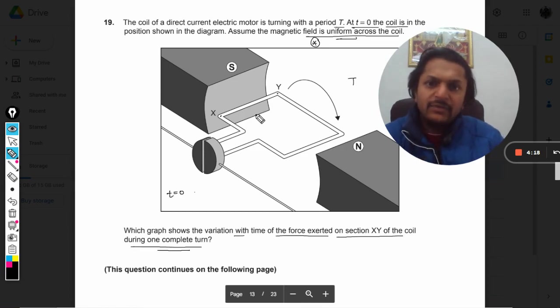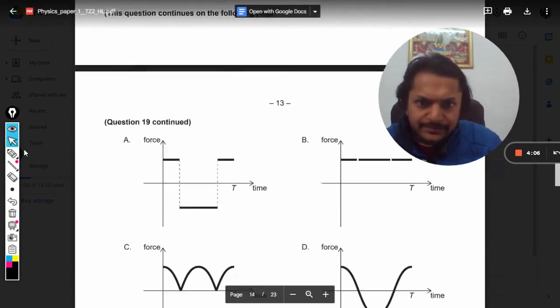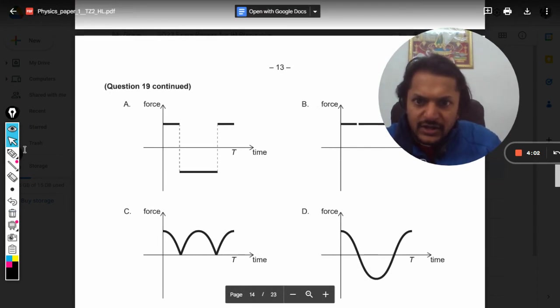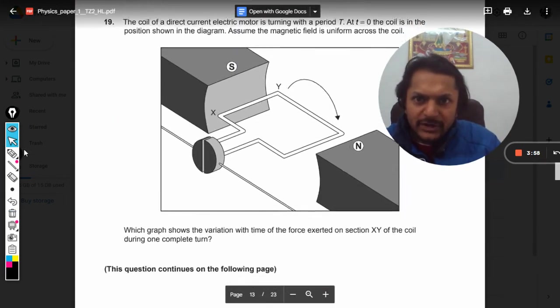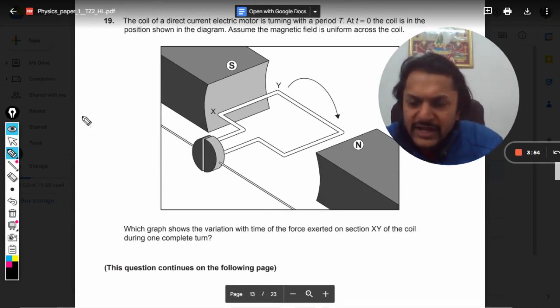So this is the section from X to Y, and we want to find the direction of the force or the magnitude of the force. Will there be a variation or not? We need to see the graph. So let us first see the graphs here. These are the four graphs on our screen. Now let us see, we need to comment on the magnitude also.